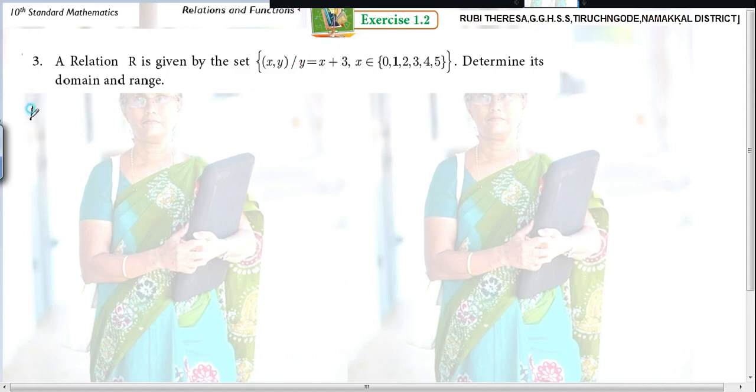So R equals (x, y). In place of y, what is it? x plus 3. So we have (x, x+3) such that x equals 0, 1, 2, 3, 4, and finally 5.